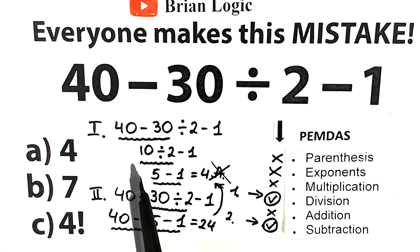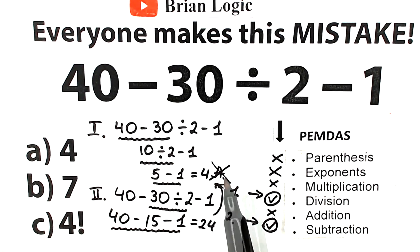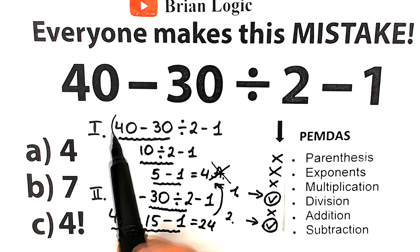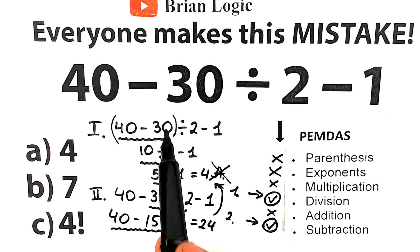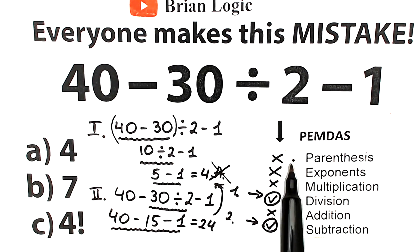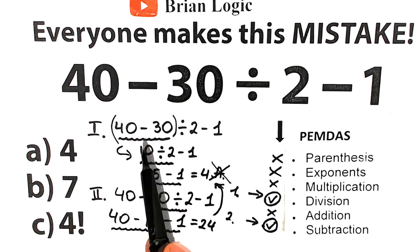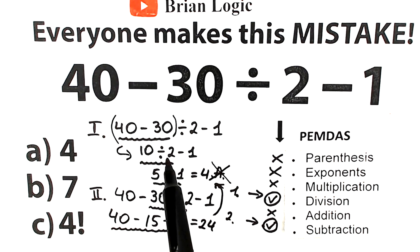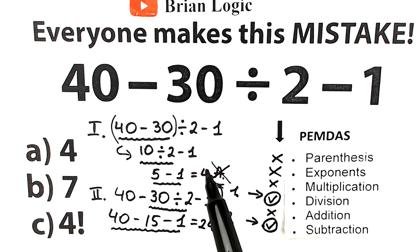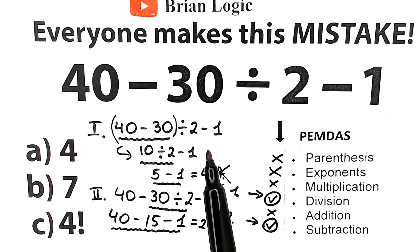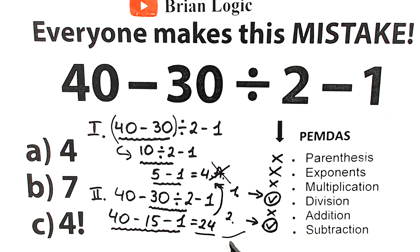I want to show you an important difference. If this expression had parentheses — like (40 minus 30) — then parentheses would be our first step. We'd subtract 40 minus 30 first, giving 10, then divide by 2 to get 5, then subtract 1 to get 4. So with parentheses, 4 is the correct answer. Without parentheses, the correct answer is 24 — solved using the correct order of operations.